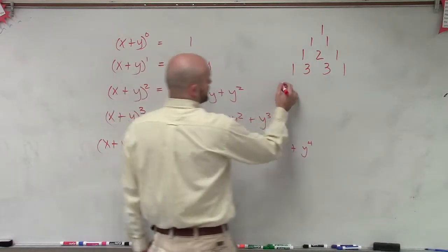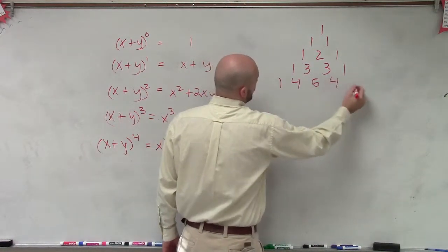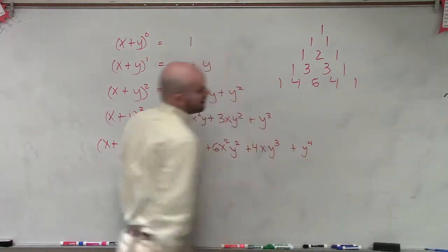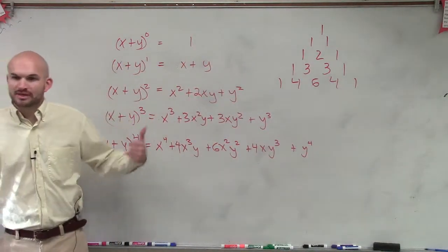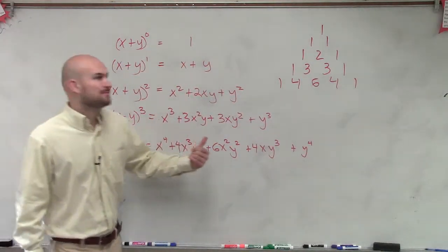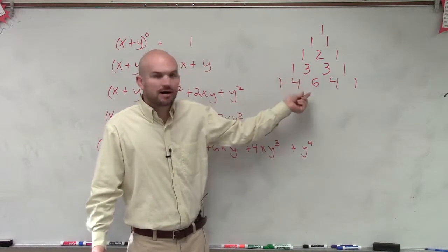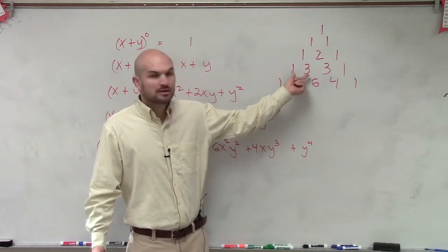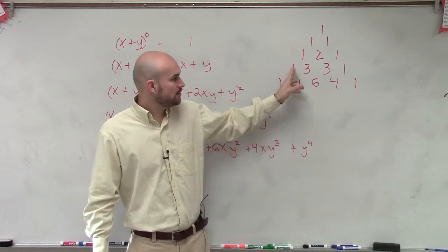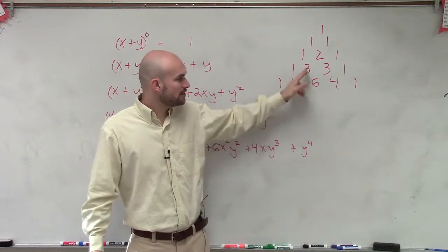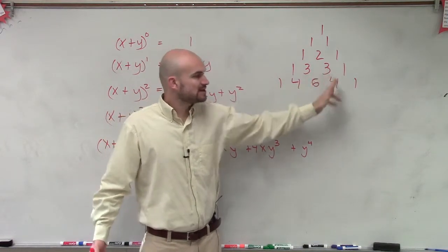And the last one is 1, 4, 6, 4, 1. And what they noticed after doing this binomial expansion is that each of these terms added up being the sum of the coefficients above it. You see how 1 plus 3 gives you 4, 3 plus 3 is 6, and 3 plus 1 is 4.